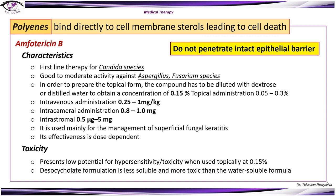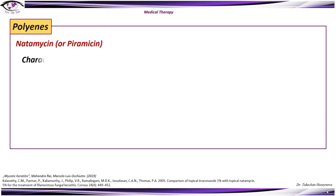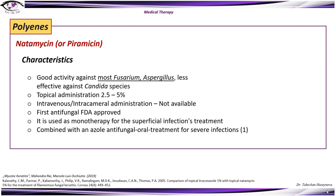Before starting local therapy, corneal debridement must be performed, as polyenes and other topical antifungal drops do not penetrate through an intact epithelial barrier. Natamycin is the first topical drop to be FDA approved. It has good activity against most Fusarium and Aspergillus species and is less effective against Candida. Topical dosage is between 2.5 and 5%; intravenous and intracameral administration is not available. It is used as monotherapy for superficial infections and can be combined with systemic antifungals in severe cases.